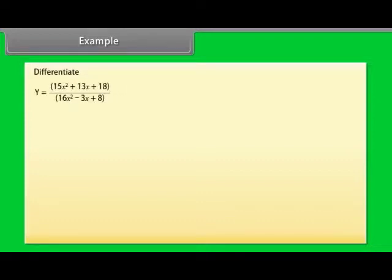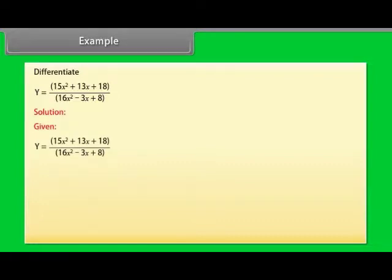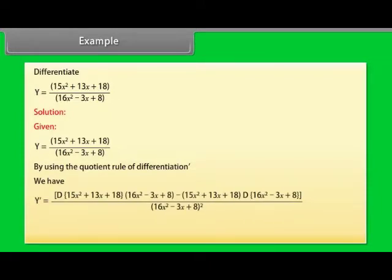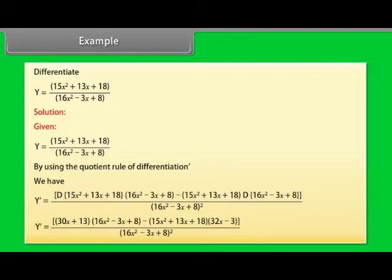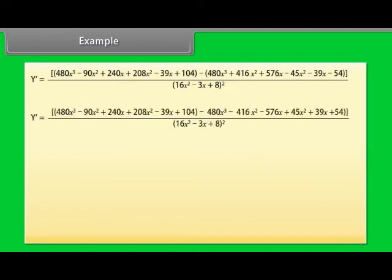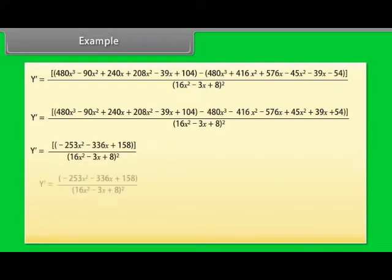Differentiate y = (15x² + 13x + 18)/(16x² − 3x + 8). Using the quotient rule: y′ = [(15x² + 13x + 18)′·(16x² − 3x + 8) − (15x² + 13x + 18)·(16x² − 3x + 8)′] / (16x² − 3x + 8)². Calculating further, we get y′ = (−253x² − 336x + 158) / (16x² − 3x + 8)².